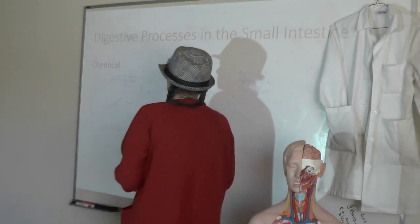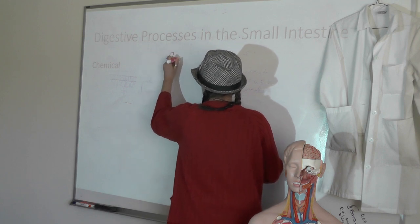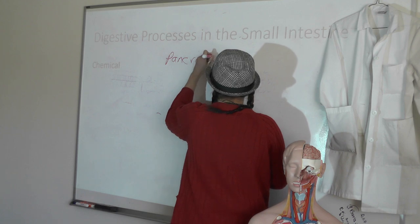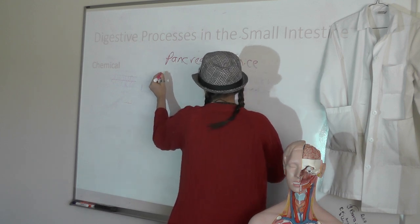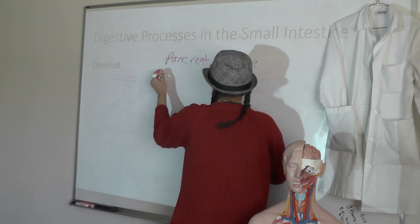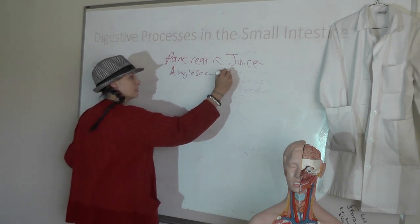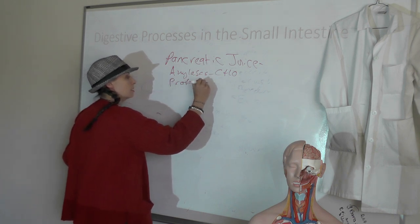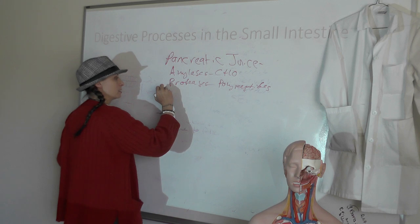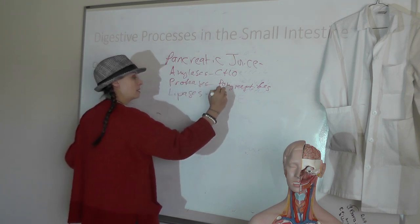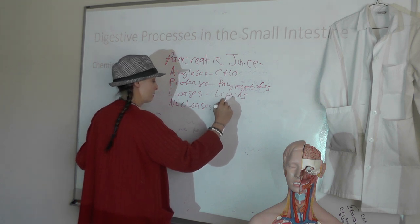For chemical digestive processes in the small intestine, starting with accessory gland secretions: pancreatic juice is going to be introduced and has a bunch of stuff in it. It contains amylases that break down carbohydrates, lipases that break down fats, proteases that break down proteins, and nucleases that break down nucleic acids. So pancreatic juice has a little bit of it all — amylases for carbohydrates, proteases for polypeptides, lipases for lipids, and nucleases for nucleic acids.